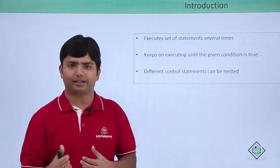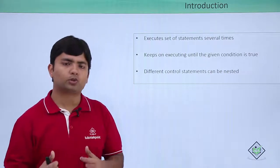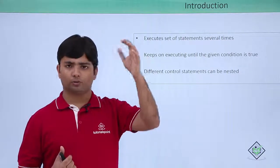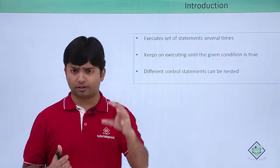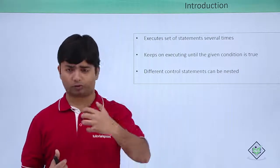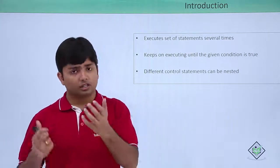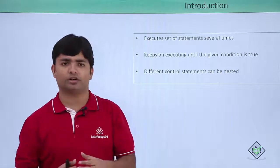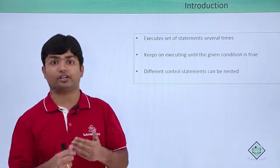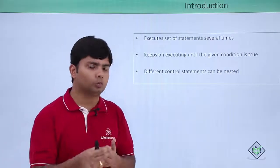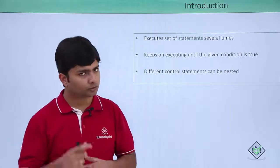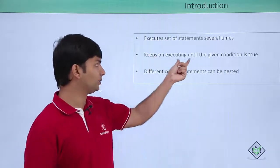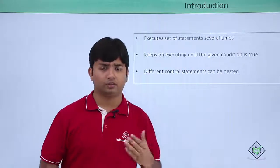For example, as I said, I want to find all the even numbers from 1 to 100. So the condition is that the value of i — whichever variable I am using — should be less than or equal to 100. As soon as the value exceeds 100, the loop must get terminated. This is what keeps on executing until a given condition is true.